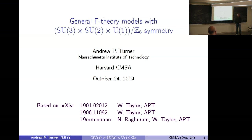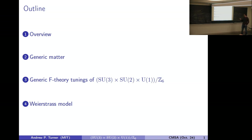Thank you for the invitation. I'm excited to be here and tell you a little bit about my recent work. Today I'm going to be talking about tuning the standard model gauge group in F-theory in a particularly general way. I'll start with an overview of what we need to know from F-theory and 6D anomaly cancellation, and then introduce a definition of what I call generic matter, which will be useful as an organizational principle for the rest of the talk.